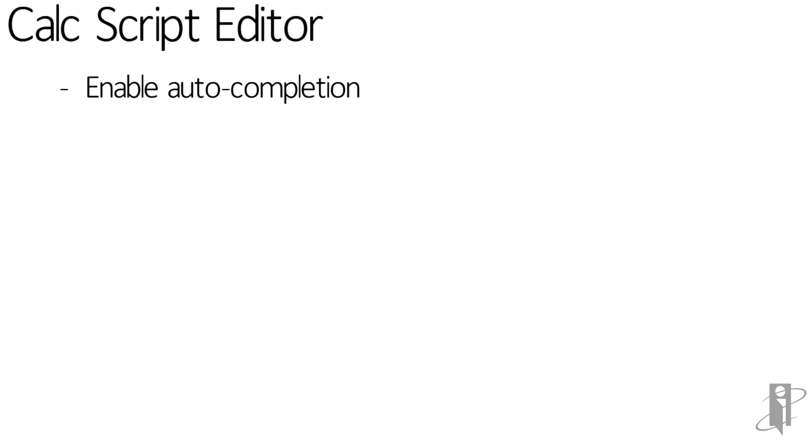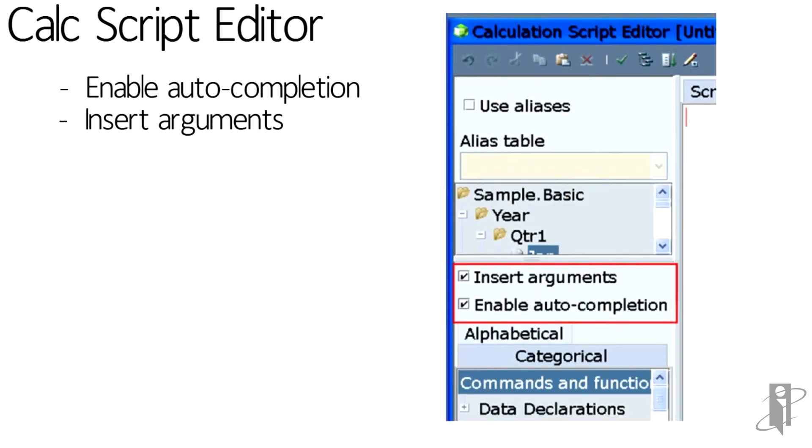We can turn on argument insertion and auto-completion so that as we start typing a command name, it will give us all the commands that start with those letters. It will also, once we click on it and tell it to insert, insert the arguments for that function.